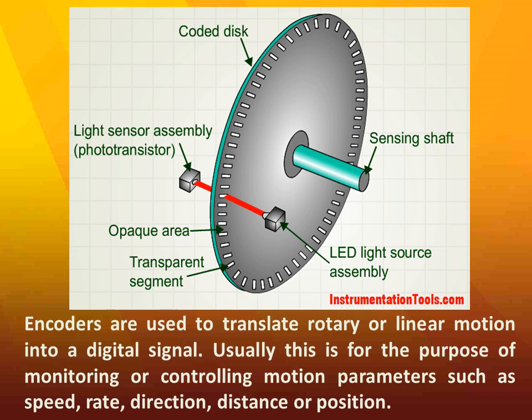Encoders are used to translate rotary or linear motion into a digital signal. Usually this is for the purpose of monitoring or controlling motion parameters such as speed, rate, direction, distance, or position.